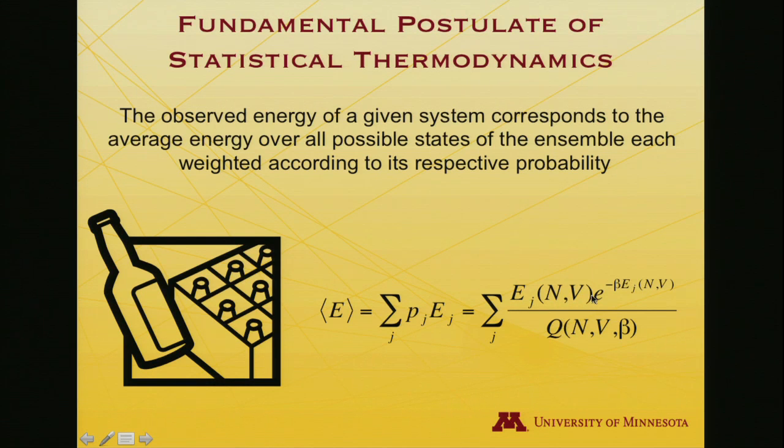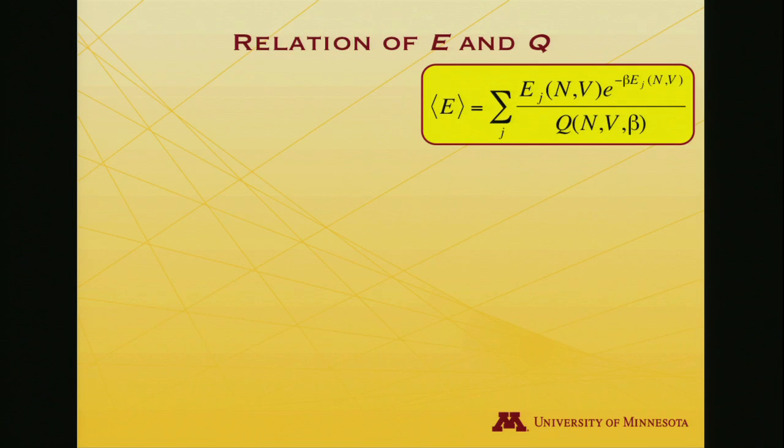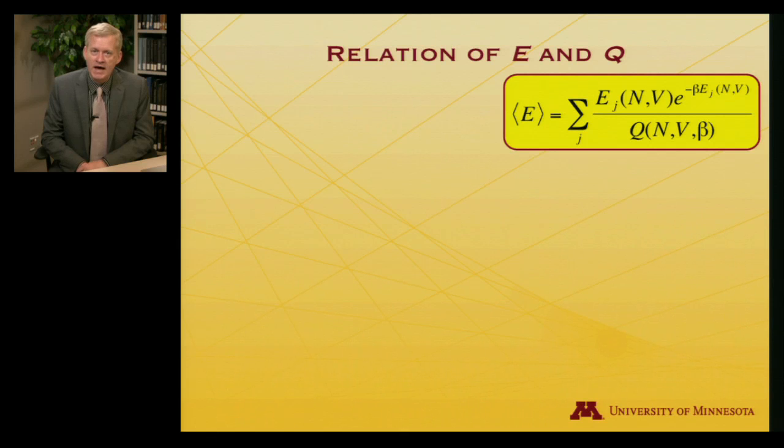Recall that we have a way to express that probability. I'll keep the energy here, emphasizing that it depends on the number of particles in the volume. And here's the probability: e to the minus beta times that energy divided by the partition function. Condensing that, here is our expectation value of the energy expressed as involving the energy and the partition function.